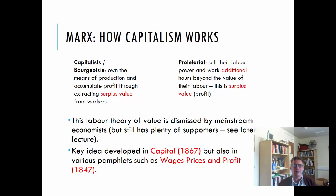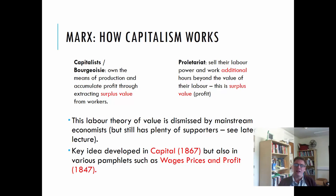In the first two days you've basically earned all the things that will pay for your work, but in the last three days you're earning extra money that the company keeps. So they're paying you for five days' work at £200, but you're actually producing £500 worth of work — the surplus value is £300, which is the company's profit. This is called the labor theory of value. It's often dismissed by mainstream contemporary economists but still has plenty of supporters. This key idea was developed in his work Capital, and also in pamphlets such as Wage, Price and Profit from 1847.